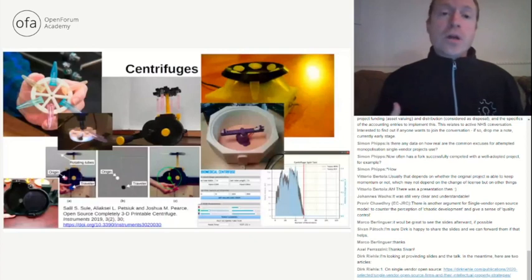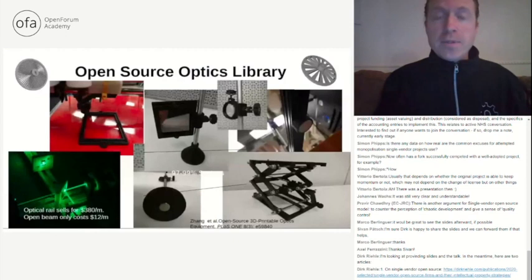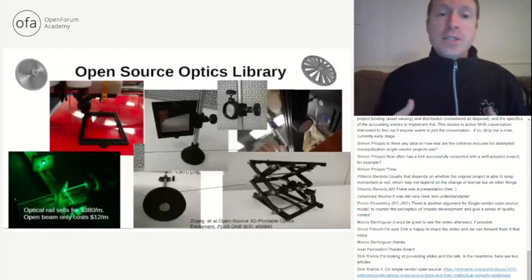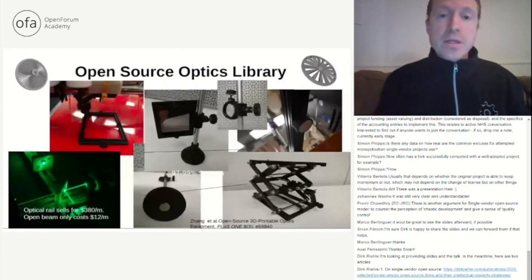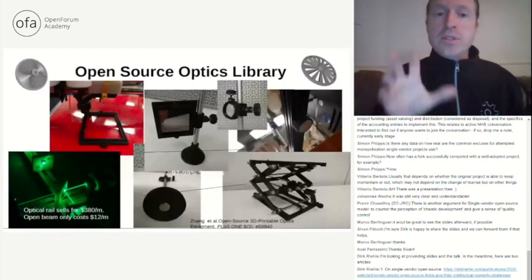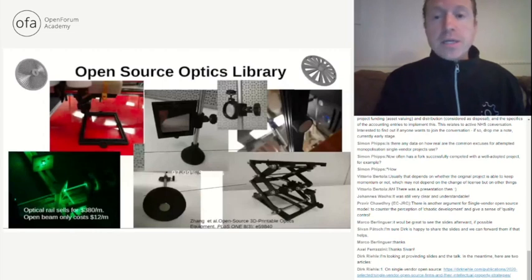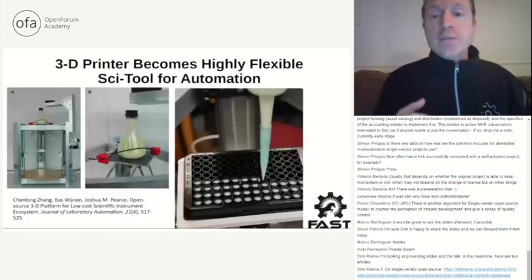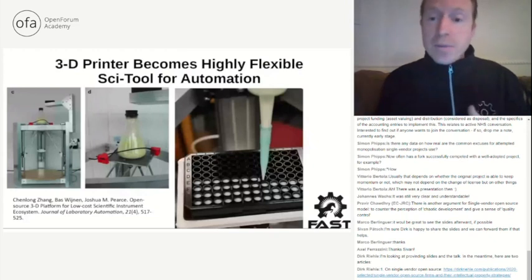Open source hardware has infiltrated many types of labs. For solar photovoltaic research requiring optics equipment, optical rail runs $380 a meter but you can get OpenBeam for $12 a meter and 3D print all your fixtures for pennies instead of $25 to $50 each. Using a completely parametric open source optics library saves between 97 and 99 percent on any optics setup. You can also use 3D printers as scientific automation tools themselves — an upside-down delta 3D printer can handle both mixing of chemicals and fluid distribution into a 96-well plate for a couple thousand dollars instead of tens of thousands.